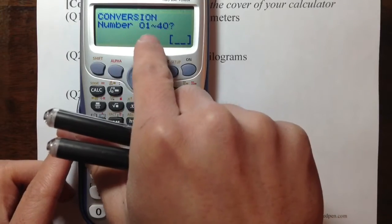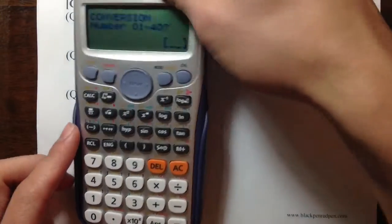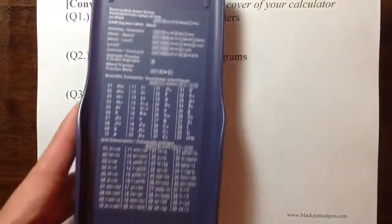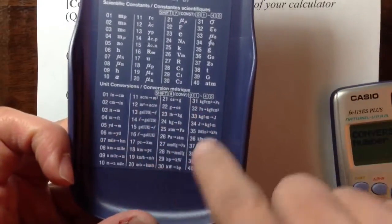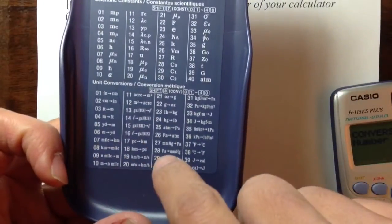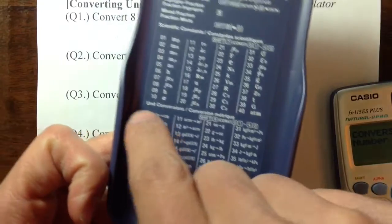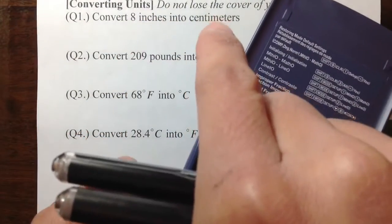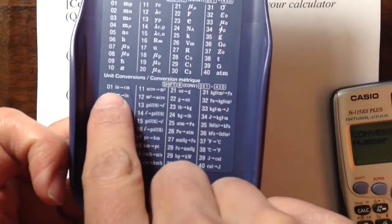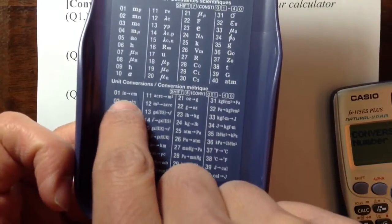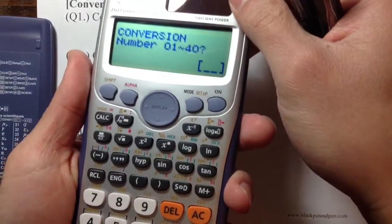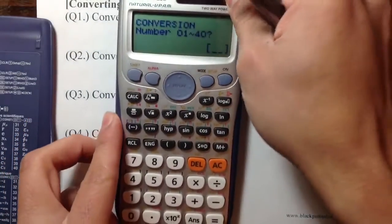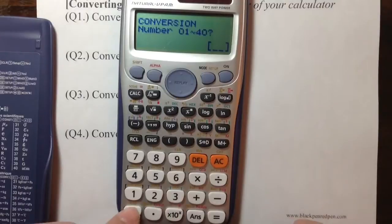And then it will ask you the conversion number, 01 to 40. So make sure that you keep your calculator's cover. And as you can see right here, we have 40 different unit conversions. In this case, we are looking for inches to centimeters, and that's the first one, inches to centimeters. So right here, when it asks you the conversion number, all we need to do is press 0, 1.